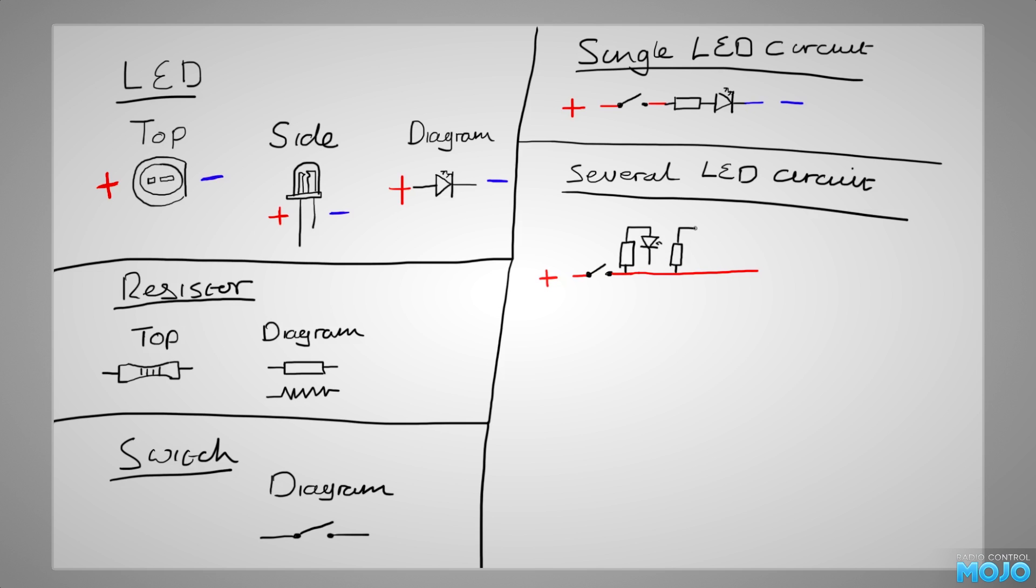It's also worth noting, it doesn't matter where the resistor-LED combo goes, as long as it's connected correctly to the supply, meaning this layout will have the same effect. If we follow the path for one LED, you can see each LED is connected to the supply the same way. Positive, switch, resistor, LED, and negative.